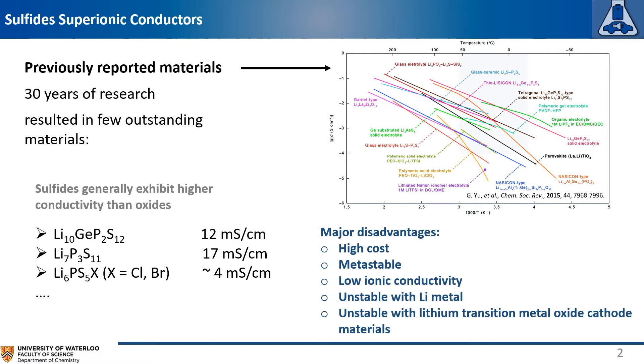However, there are still some major disadvantages. LGPS with germanium is really expensive and unstable with lithium metal. Lithium-711 is a metastable phase which requires a complicated synthesis process to achieve high ionic conductivity. Other sulfide solid electrolytes like beta-lithium-3PS4 accept much lower ionic conductivity, and all those sulfide materials are not stable with lithium transition metal oxide cathode materials. Thus, we are particularly interested in argyrodite material.